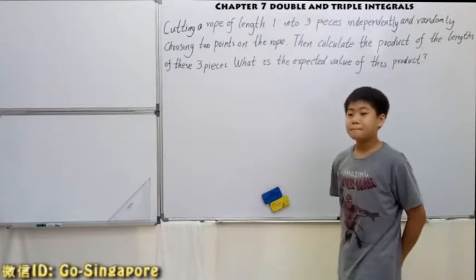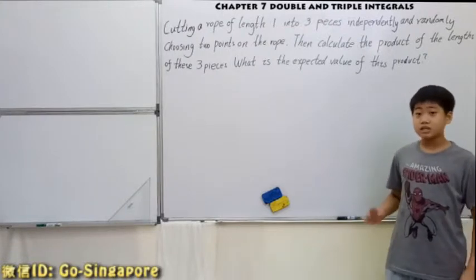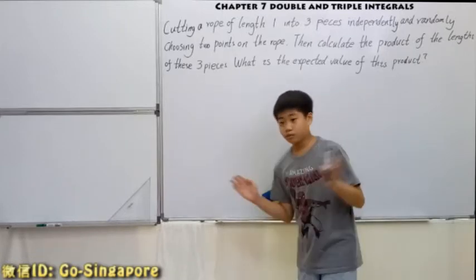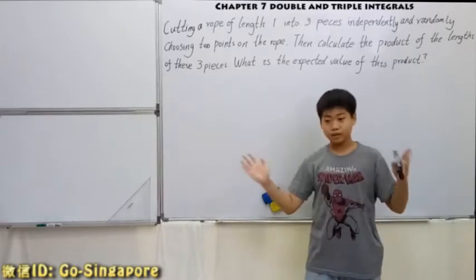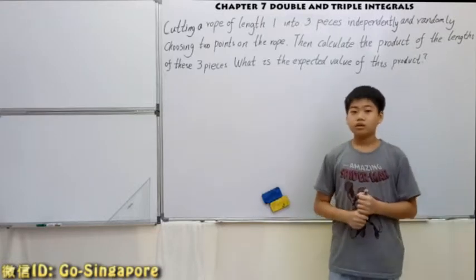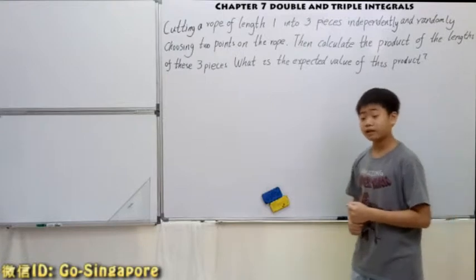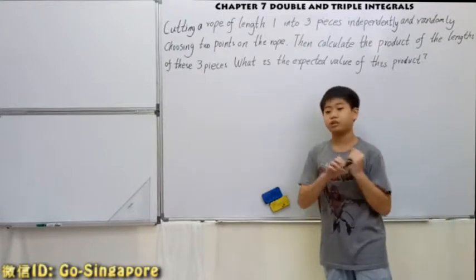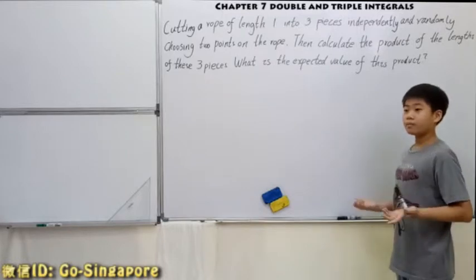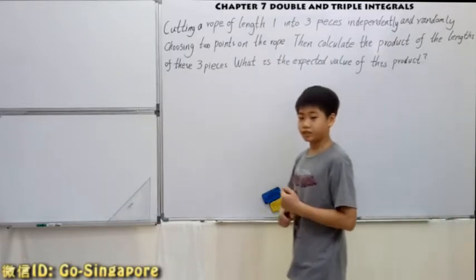Expected value — it means, like, how many values can there be, then you divide by that. It's actually something like the average. Pretty much, it's just the average.